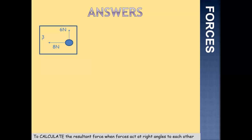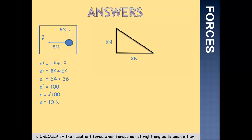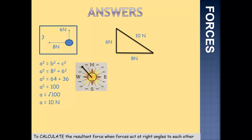Question 3: 6 newtons acting to the north and 8 newtons acting to the west. The first step is to draw our triangle, ensuring our hypotenuse goes in the same direction as the resultant force. We've got 6 newtons going to the north and 8 newtons to the west, so we use Pythagoras' theorem: 8 squared plus 6 squared. 8 squared is 64, 6 squared is 36. Add those together to get 100, so A is the square root of 100, which is 10. The force is acting to the north and to the west — a northwesterly direction. Our resultant force is 10 newtons to the northwest.